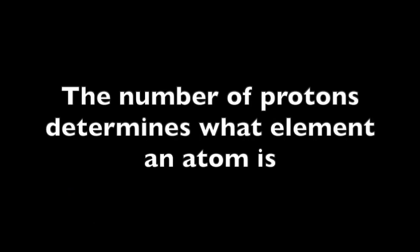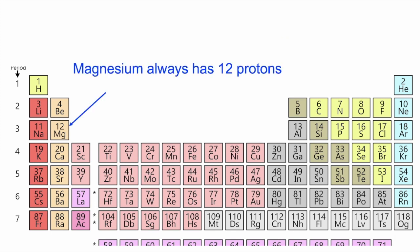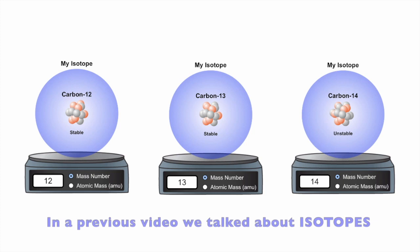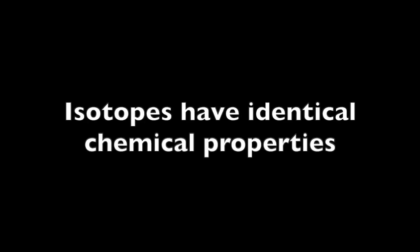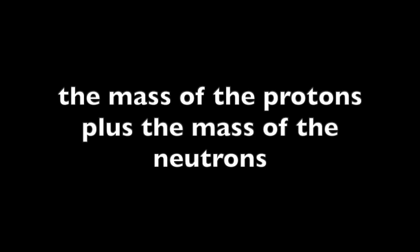As you should recall, the number of protons determines what element an atom is. For example, an oxygen atom always has eight protons, an atom of magnesium always has 12 protons, etc. But the number of neutrons in an atom can vary. In a previous video, we talked about isotopes, which are atoms with different numbers of neutrons. Isotopes have identical chemical properties and can participate in the same chemical reactions. However, they have different masses, and the mass of an isotope is approximately equal to the mass of the protons plus the mass of the neutrons.